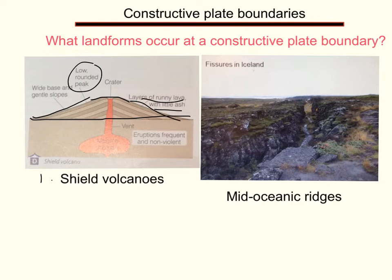This is all because of the magma. The magma is runny and has a temperature of 1200 degrees centigrade. So when it erupts, well the lava erupts, it can travel a long way before it cools. Hence, it spreads out.